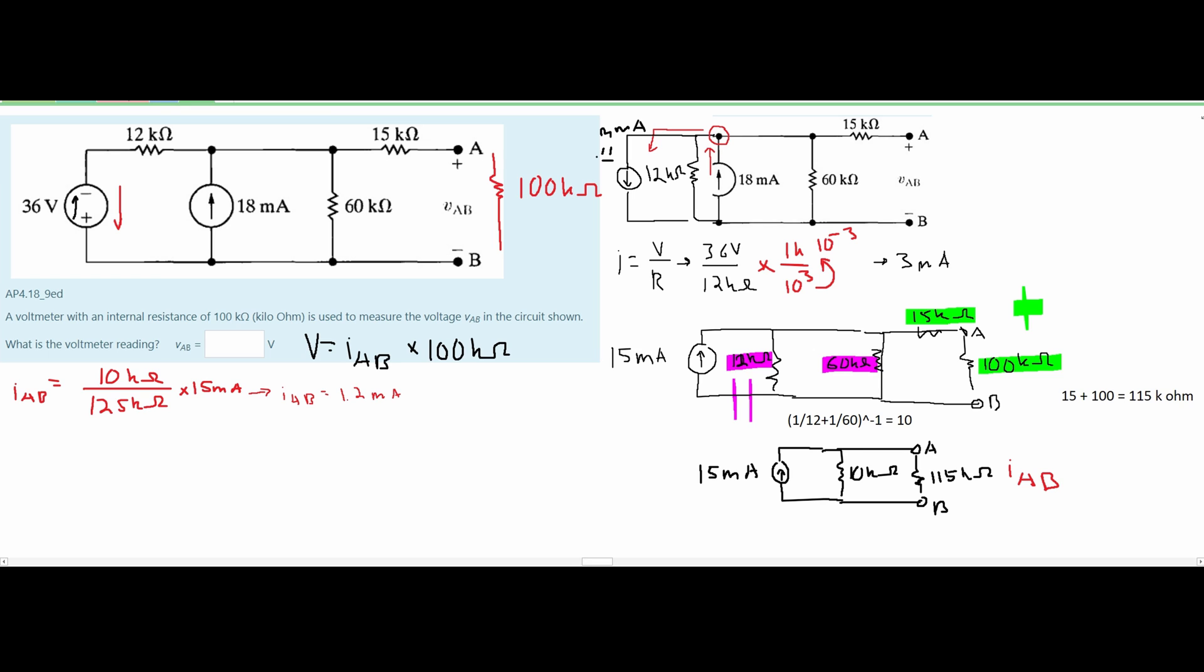So when we look at our voltage of AB we're going to have our 1.2 milliamps and then we're going to convert this to just amps. So we're going to have 1 milli underneath 10 negative cubed. This is being multiplied by our 100 kiloohm resistor and this is 10 cubed on top.